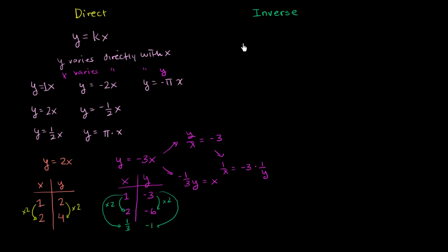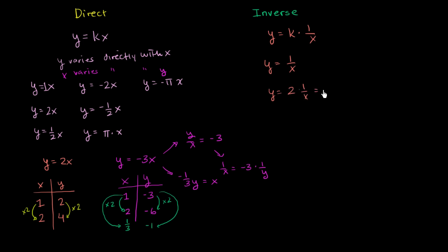Inverse variation: the general form (using the same variables — though it could be a and b, or m and n) is y = k · (1/x), so instead of a constant times x, it's a constant times 1/x. Examples: y = 1/x, y = 2 · (1/x) which equals 2/x, y = ⅓ · (1/x) which equals 1/(3x), and y = -2/x.